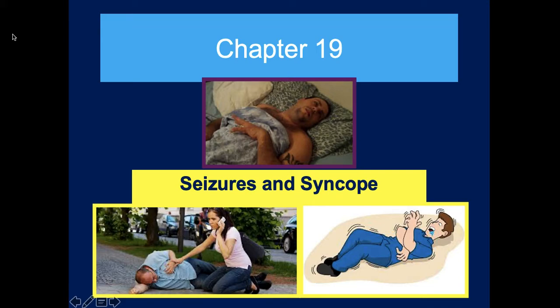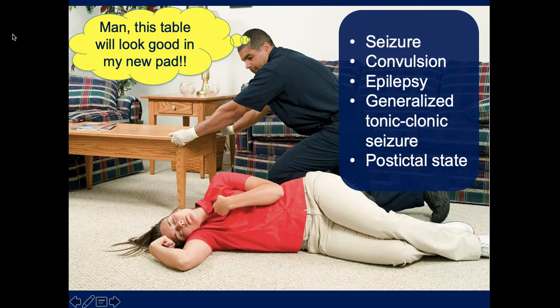This is Chapter 19: Seizures and Syncopal Episodes. A seizure is basically a disorganized discharge of electrical activity in the brain. People are born with epilepsy, and these conditions are managed with different types of medications. There are various types of seizures. The one most commonly seen, and the reason why we usually get called out, is the generalized tonic-clonic seizure, also known as a grand mal seizure.